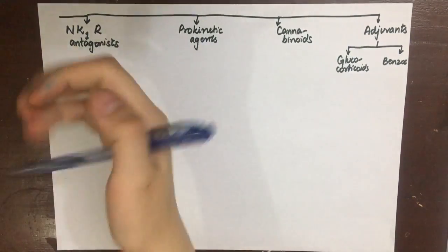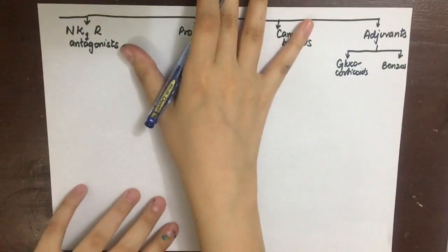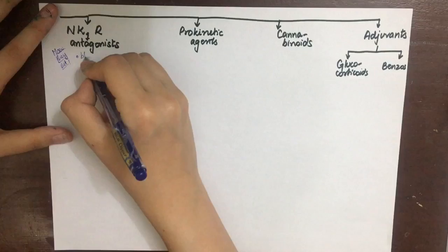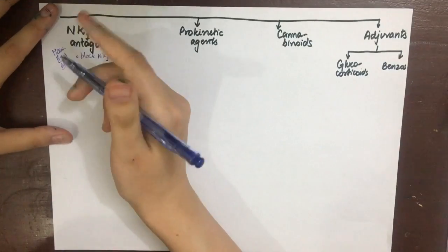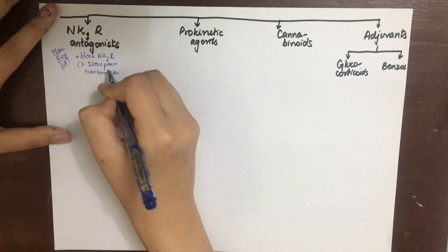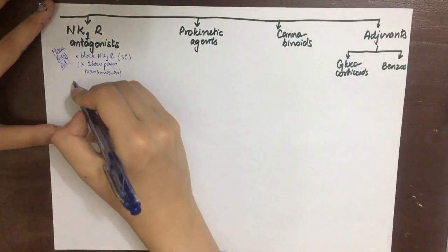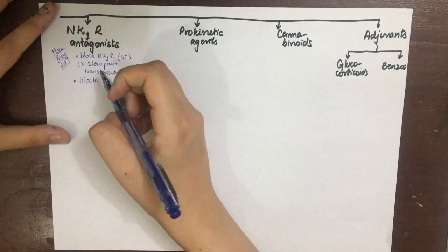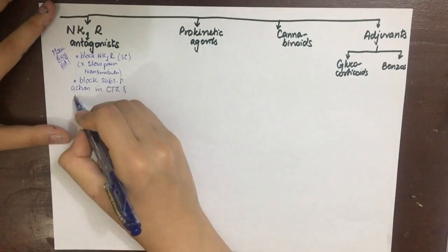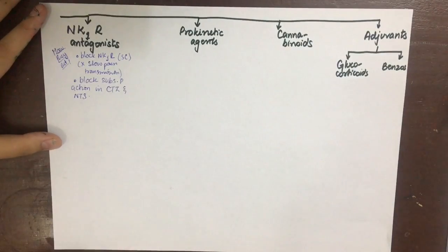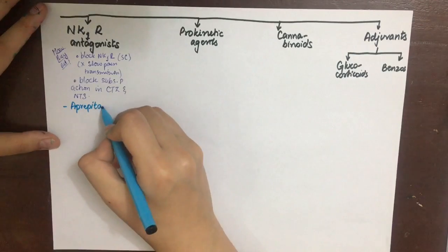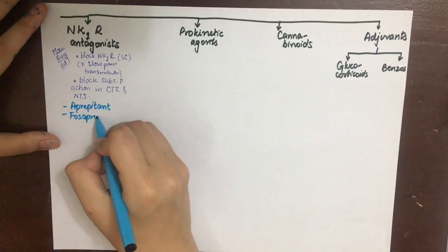The next drugs are NK1 receptor antagonists or neurokinin receptor antagonists. They block the NK1 receptor, hence block the transmission of slow or dull visceral pain through the spinal cord to the vomiting center. They also block the action of substance P on the chemo trigger zone and NTS. The chief drugs involved are aprepitant and fosaprepitant. These are very important, please remember this.